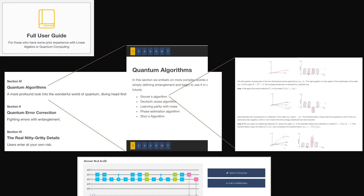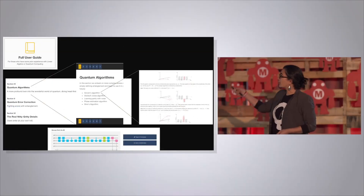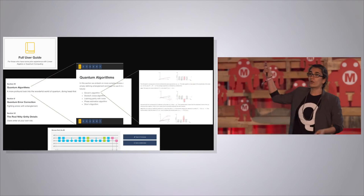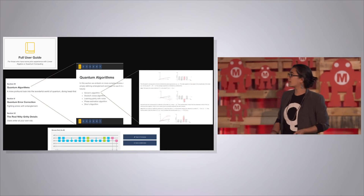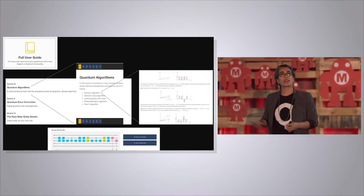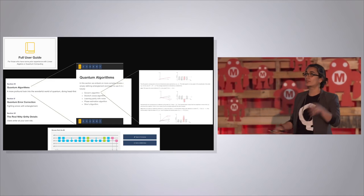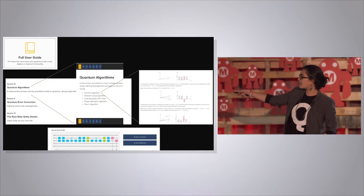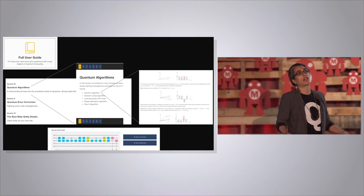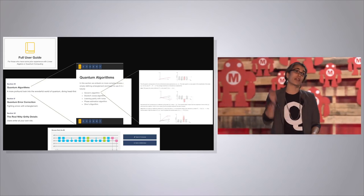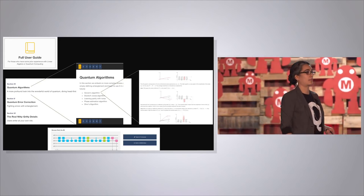Once you get through the beginner's guide and you're really keen, go into the full user guide. This shows you some of the algorithms we're enabling you to learn about. If you click into Grover's algorithm, you can get a whole derivation of what's going on in that algorithm — including how to think about that quantum interference and amplitude amplification. This is the sequence of gates you need to implement Grover's algorithm on the real device, and you can actually implement that algorithm on a real quantum computer.